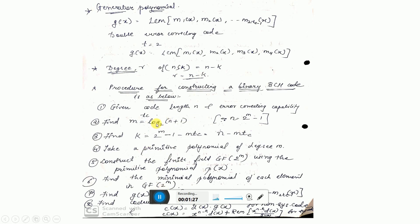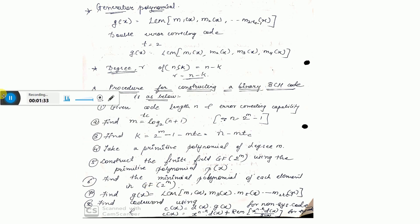These are the steps to construct a binary BCH code. Step 1: note the code length N and the error correcting capability T_C given in the question. Find M from the formula log base 2 of (N+1). You can also find N as 2^M minus 1. Step 3: Find K, where K = N minus M·T_C. Then write down the primitive polynomial for degree M.